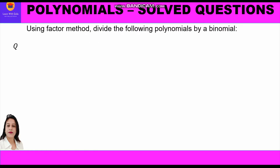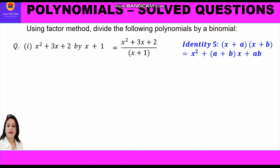The first question is to divide x squared plus 3x plus 2 by x plus 1. Since we have to use the factor method, let's first write it in fraction form, keeping the dividend in the numerator and divisor in the denominator. Now we shall factorize the numerator, that is x squared plus 3x plus 2, using identity 5.